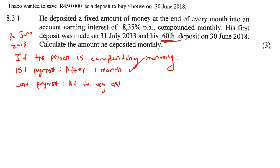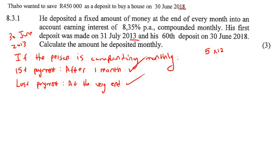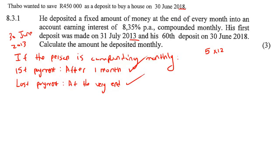He makes his last payment on 30 June 2018, right at the very end — so there's nothing funny about this question. To work out the number of payments, since it's the normal scenario from 2013 to 2018, that's five years. He's compounding monthly, so his number of payments is just five times 12. You don't need to add or subtract anything because this person is following the normal standard approach.